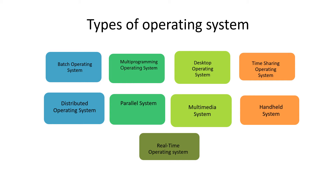Evolution of operating system. Traditionally there was a single user, single processor and single processing operating system. With the requirements of users and time, there was a great evolution in operating systems. They were based on different parameters like users, number of processors and number of processes. So there are different types of operating systems: batch operating system, multiprogramming, desktop, time sharing, real time, distributed, parallel, multimedia and handheld system.